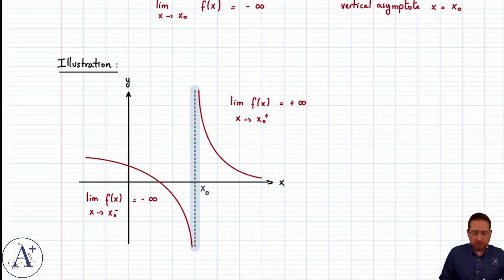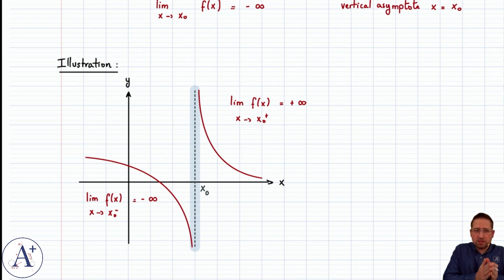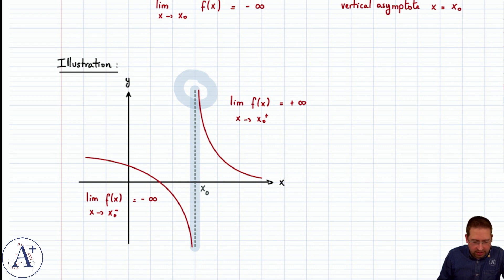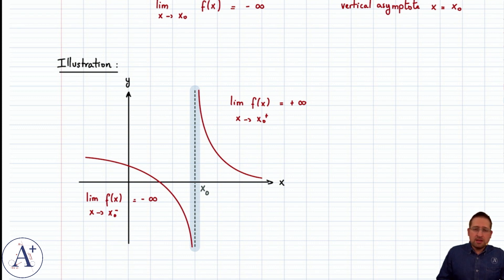An asymptote is a line — it could be vertical, horizontal, or even slant — that the graph of the function approaches more and more as x either approaches x0 or sometimes approaches infinity. In such a way that the function never reaches the asymptote. In other words, the curve here never hits the dotted line. You can come as close as you want to x0, and this curve will come as close as you can imagine to the dotted line, but it will never touch it. It will never intersect with the asymptote. That's the definition of the asymptote.